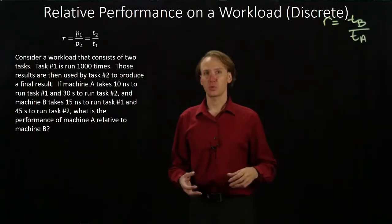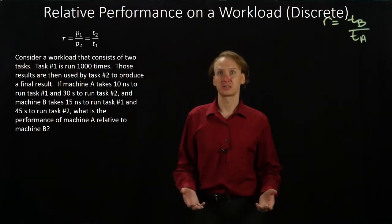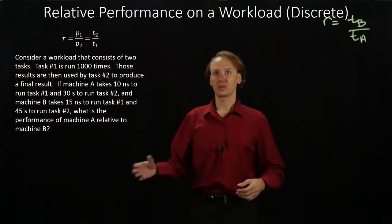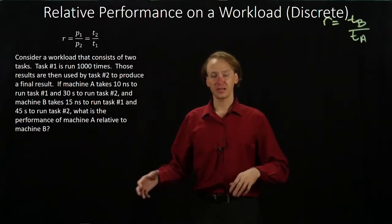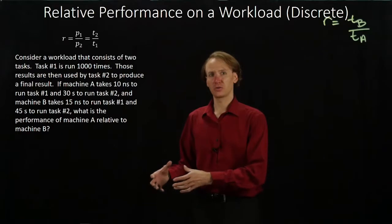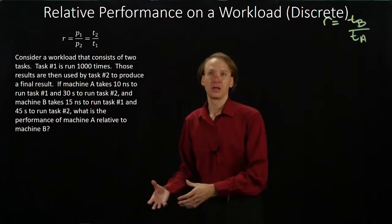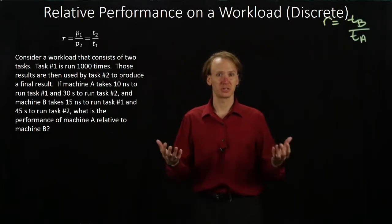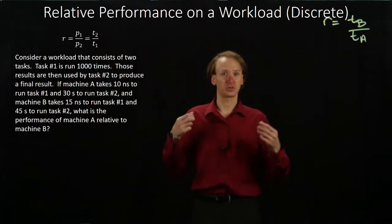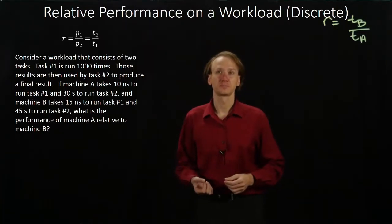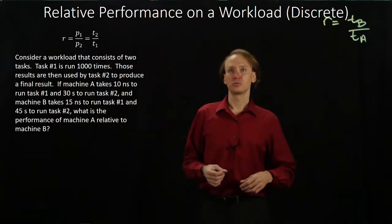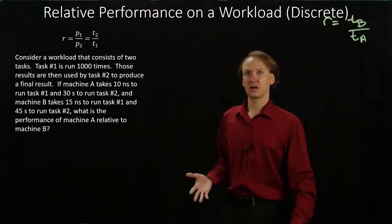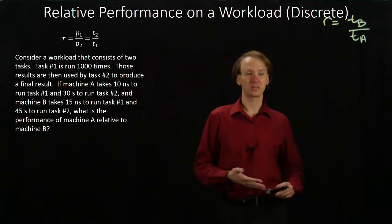In this case, we have a workload that's composed of two different tasks. Task number one runs 1,000 times, and then task number two comes along, takes the results of all those task number ones that ran, and does some work on them, compiles the results, maybe produces some nice output that shows you what task number one did. So task number one runs 1,000 times for every instance of task number two.